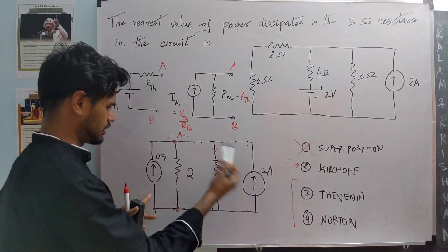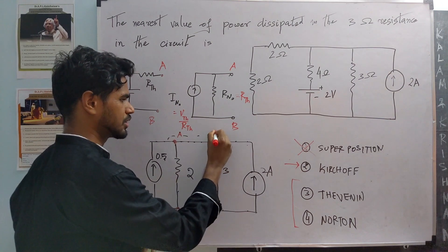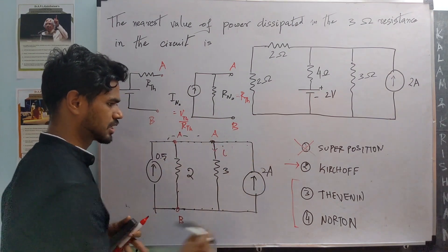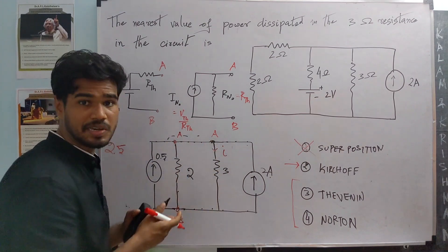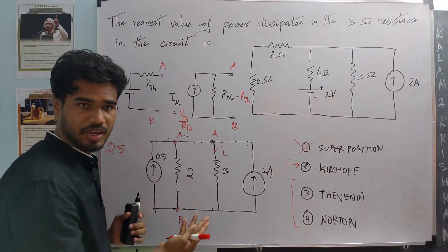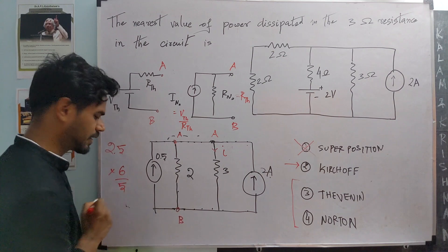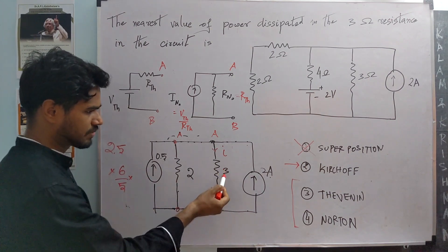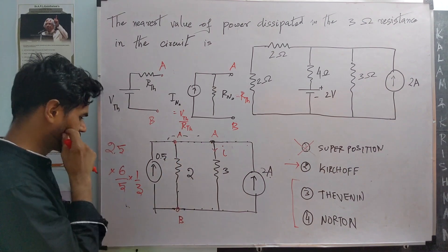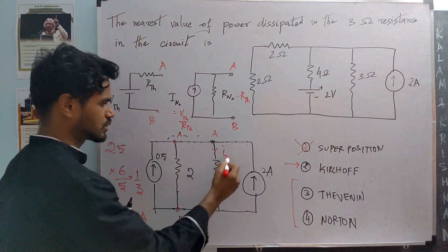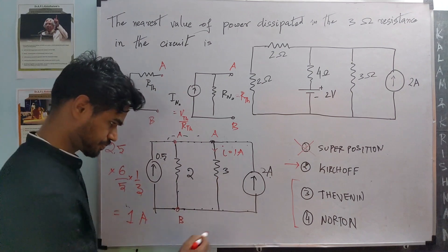Now what is the total current entering node A from the outside? The sum of the two currents is 2.5 amperes. When such a current enters parallel resistors, more current flows through the least resistance path. The equivalent resistance of 2 and 3 in parallel is 2 times 3 divided by 2 plus 3, which is 6 by 5. Multiplied by 1 by 3 and then by 2.5 total current, this gives 1 ampere through the 3 ohm resistance. So the power dissipated is I squared R, equal to 1 squared times 3, which is 3 watts.